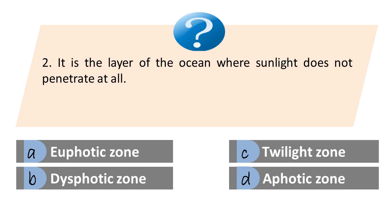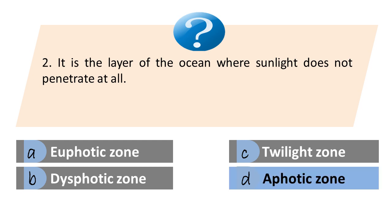Number 2. It is the layer of the ocean where sunlight does not penetrate at all. A. Euphotic zone. B. Dysphotic zone. C. Twilight zone. D. Aphotic zone. The answer is D. Aphotic zone.